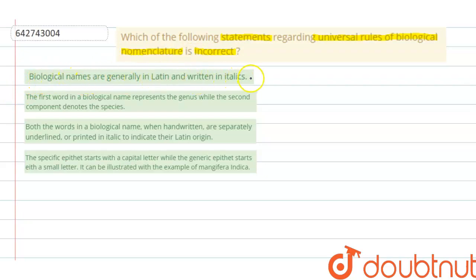in Latin and written in italics. So it is a correct statement. Whenever we talk about biological names, then these biological names are written in italics. Italics indicate their Latin origin.